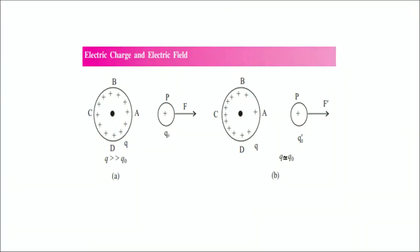This can be understood from figures A and B. In figure A, we are finding the electric field due to the charged body on the left, and the test charge is Q naught. This test charge Q naught is very very small compared to the charge Q, so it is not going to disturb the charge distribution on the charged body.